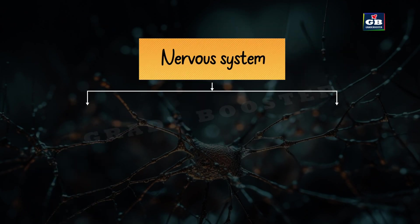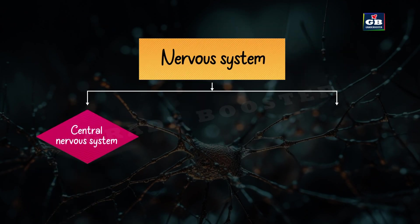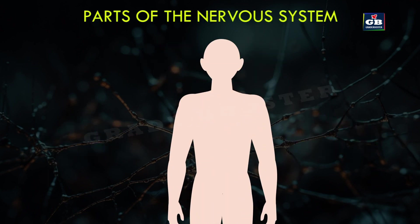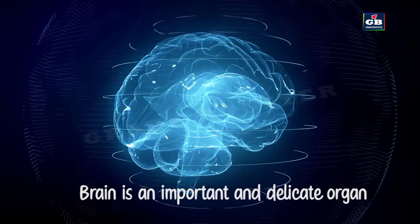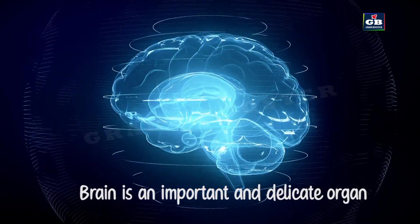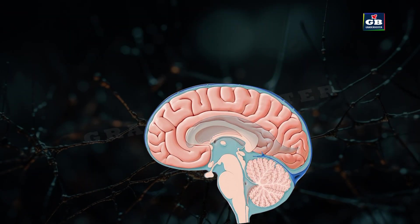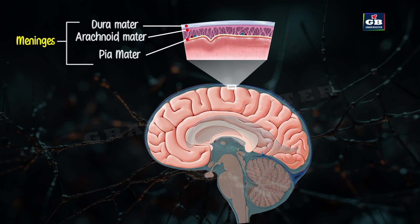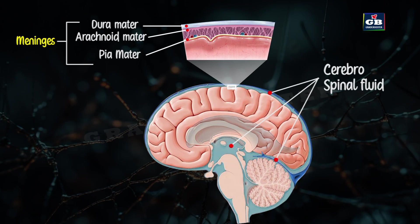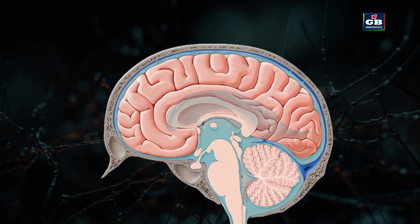Nervous system structure. The central nervous system (CNS) consists of the brain and spinal cord. The peripheral nervous system (PNS) consists of nerves. The brain is soft and delicate — it is protected by three layers called meninges. Between these layers there is a fluid called cerebrospinal fluid that prevents shocks. The brain and meninges are covered by a bony case called the cranium.